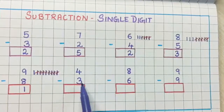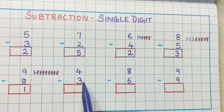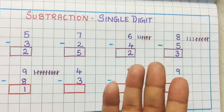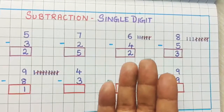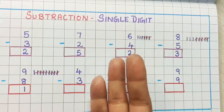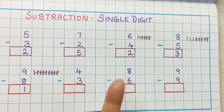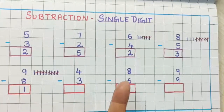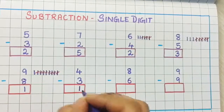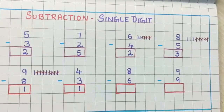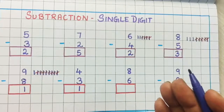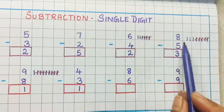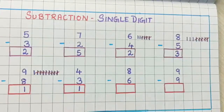Now 4 minus 3. This is a small number so we can do it on our hands also. We take 4 fingers and we are going to remove 3 fingers: 1, 2 and 3. So how many fingers are left? 1 finger is left. So the answer is 1. You can do subtraction on your hands or you can make lines — whichever is easy for you.